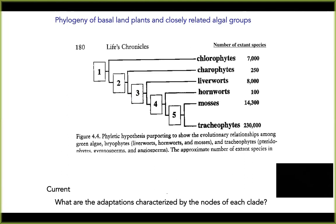I would like you to be listening for the specific adaptations that characterize each of the numbered nodes within this clade. We want to understand what the synapomorphies are — the specific traits associated with each common ancestor — but then also the unique selective pressures operating on each of these common ancestors that ultimately led to the divergence and radiation of each of these different groups.